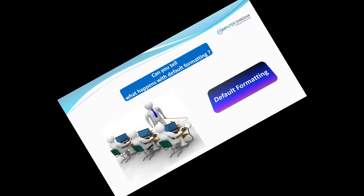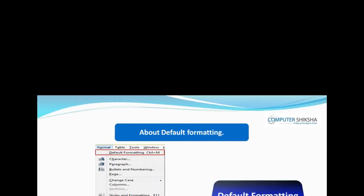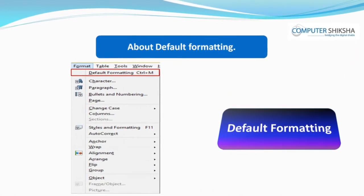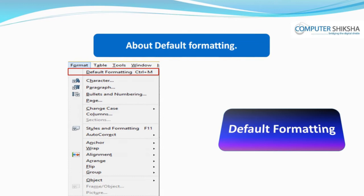Can you tell what happens with default formatting? Default formatting is an option which helps you to remove any formatting done on your line or paragraph and bring it back to its original form.